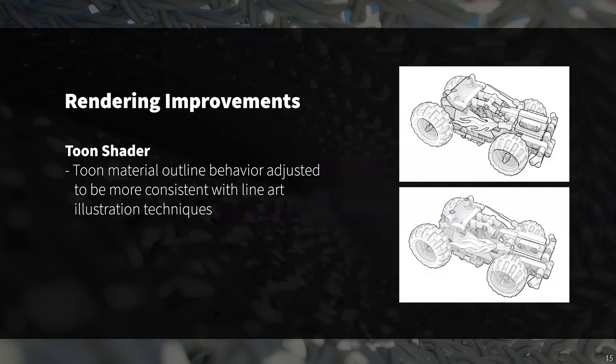Toon shader outline behavior has also been improved. The goal was to create a toon shader that was more consistent with traditional line drawing weights. You can see on the right an example of a toon shader material in KeyShot 10 at the top versus the same toon shader rendered in KeyShot 9 at the bottom. There's a big difference between the two, and it's clear that the KeyShot 10 rendering demonstrates a more realistic representation of actual line drawing art.